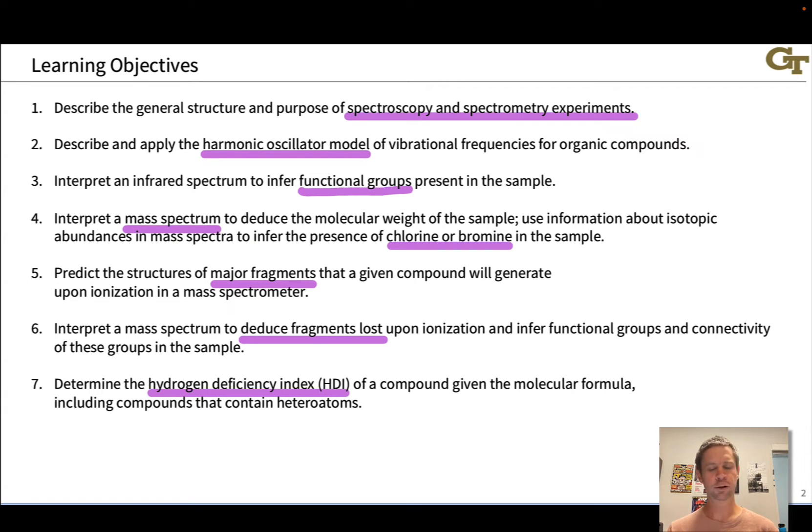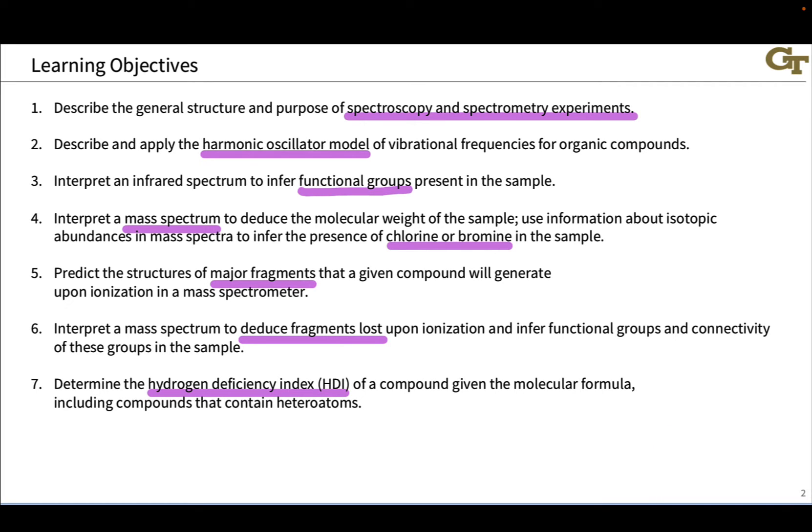So what we're going to do in this unit is first introduce the idea of spectroscopy and spectroscopy experiments in general. Talk a little bit about the interaction between light and matter and why that gives us great insight. And then we're going to dig into infrared spectroscopy talking about the harmonic oscillator model which is a theoretical basis for understanding infrared spectra and how vibrations of bonds depend on the masses of atoms involved in the bonds and the bond order. We'll learn how to interpret an infrared spectrum to infer functional groups present in the sample. We can't see how those functional groups are connected from an infrared spectrum but we can elucidate the nature of the functional groups in many cases.